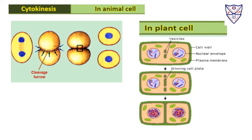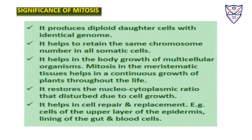The significance of mitosis: it produces diploid daughter cells with an identical genome, retaining the same number of chromosomes in all somatic cells. It helps the body to grow and repair itself. Mitosis in meristematic tissues enables continuous growth of plants throughout their life. It restores the nucleo-cytoplasmic ratio disturbed by cell growth, and helps in cell repair and replacement, such as in the upper layer of the epidermis, the lining of the gut, and in blood cells.